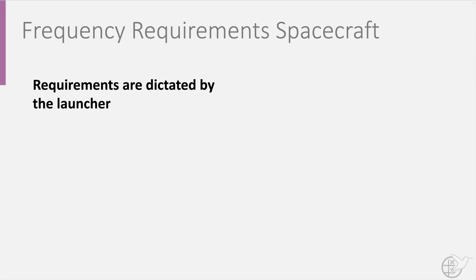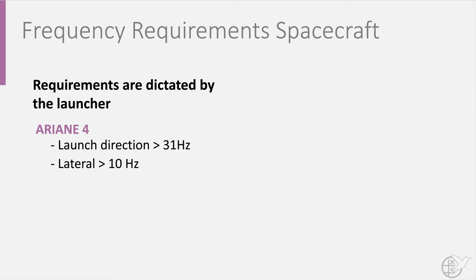For example, the minimum natural frequency of the Ariane 4 launcher is 31 Hz in launch direction and 10 Hz in lateral direction. For the Space Shuttle, they are each 13 Hz.